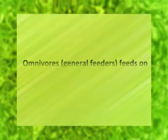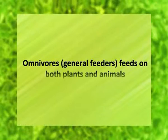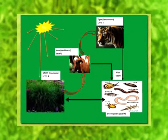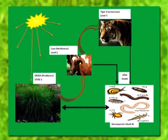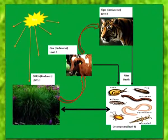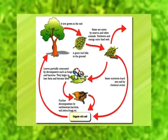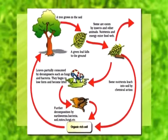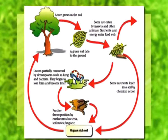And there is another category, that is omnivores. Omnivores are also called general feeders — those organisms which feed on both plants and animals. For example, man. And finally, decomposers. Decomposers are tiny organisms, including bacteria and fungi, which convert organic compounds of dead plants and animals into inorganic materials.